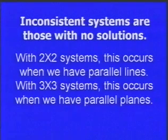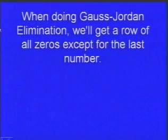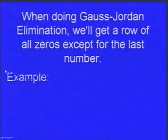When we have an inconsistent system, there's no way the system would have a solution. When doing Gauss-Jordan elimination, we're going to get a row of all zeros except for the last number. That's how we know it's an inconsistent system.